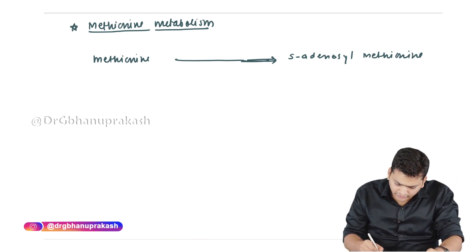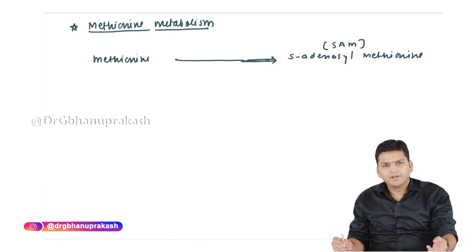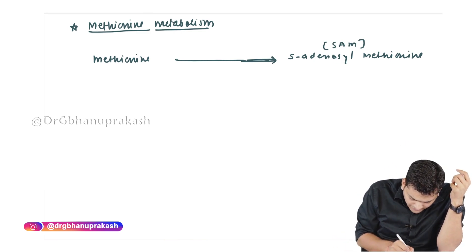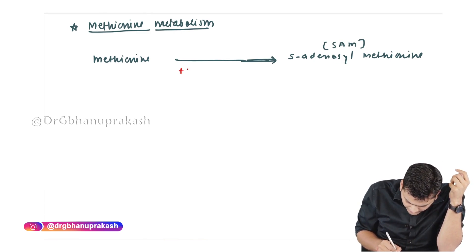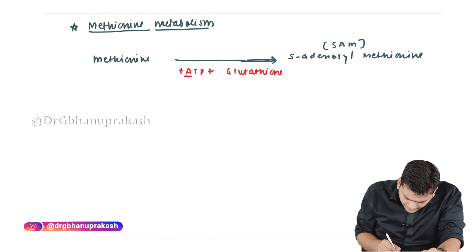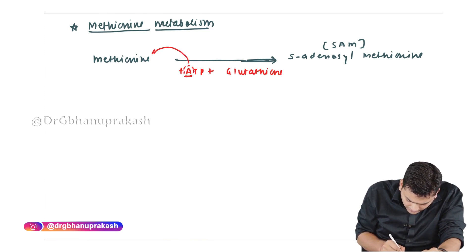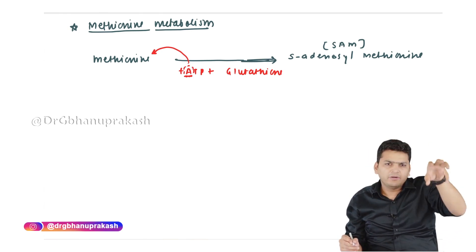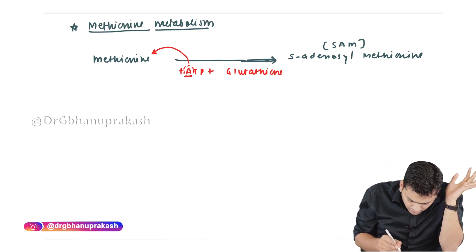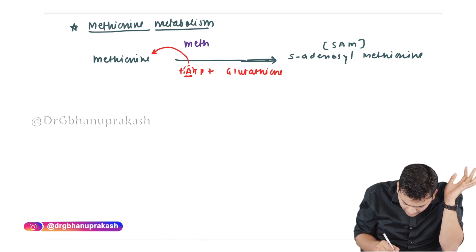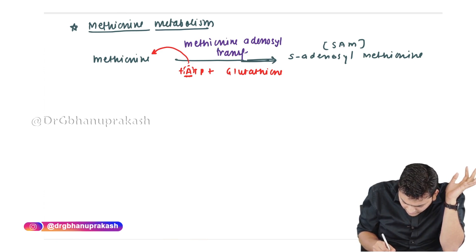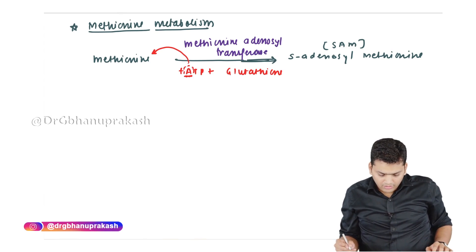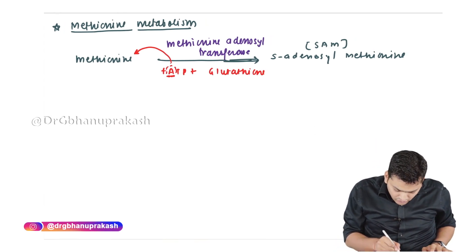S-adenosyl methionine, written in short as SAM. To make SAM, we use ATP along with glutathione. The adenosyl group from ATP is transferred onto the sulfur group of methionine, since methionine is a sulfur-containing amino acid. The name of the enzyme that does this is methionine adenosyl transferase, abbreviated as MAT.